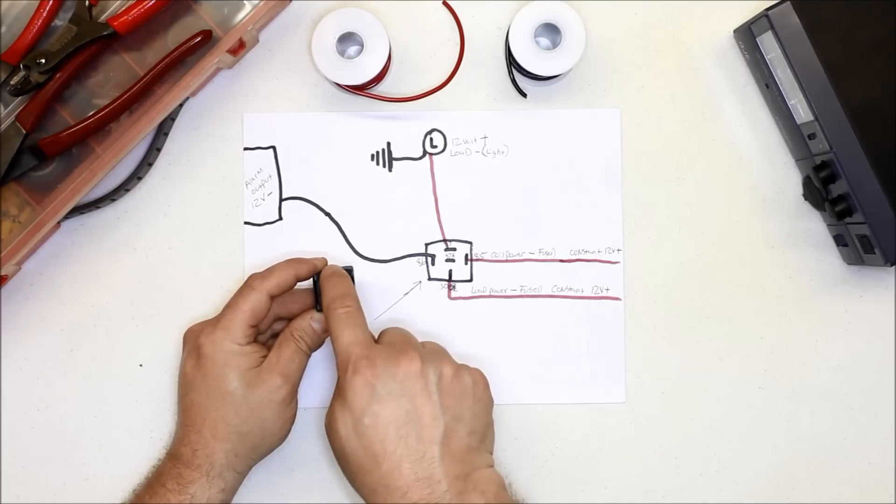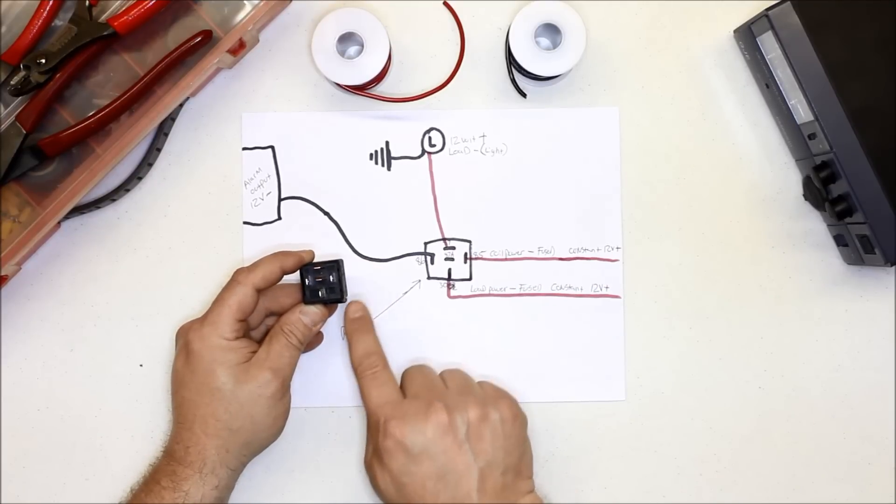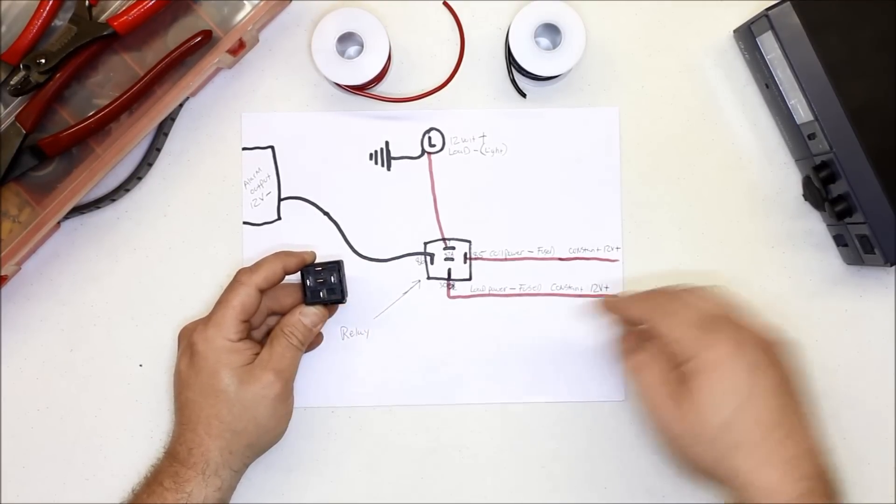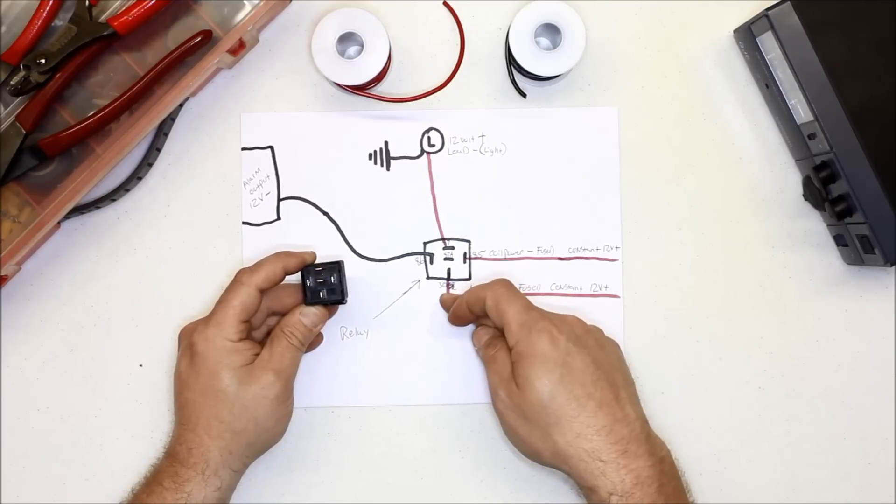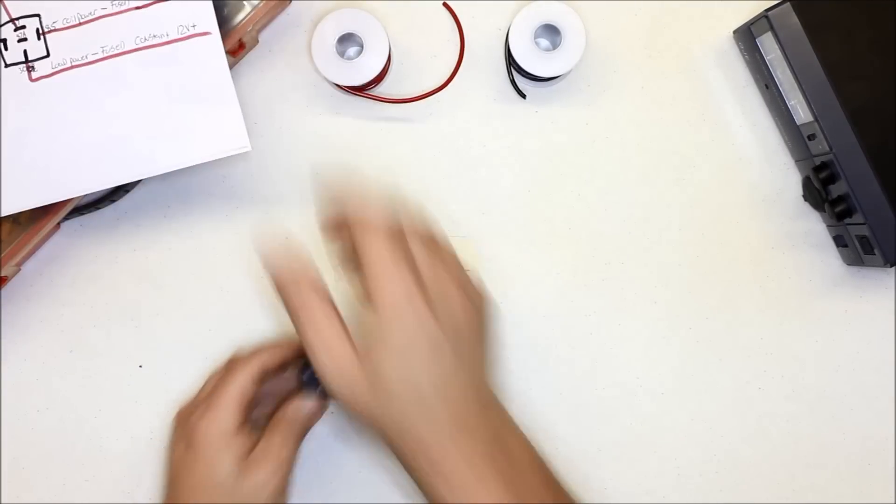When we trigger this relay with the negative from the aftermarket box, all it's doing is transferring 12 volts from one terminal to the other terminal to power the light. So we're using the negative to trigger the relay, and the relay is just passing through 12 volt power from this side to this side.